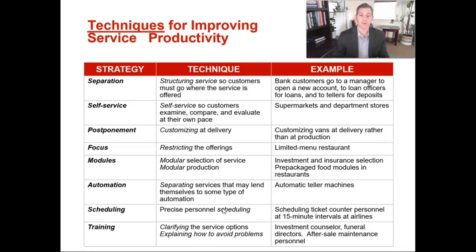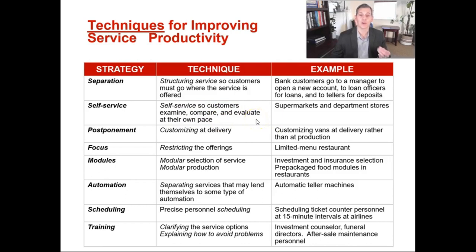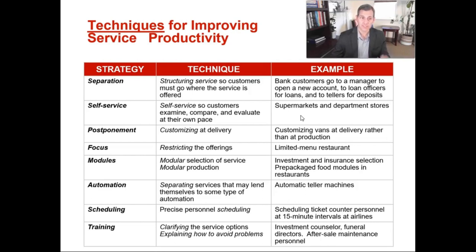There are techniques for improving productivity in the service sector. If you don't want to be highly customized and don't want a high degree of labor, there are ways to improve service productivity. Think about self-service — customers examine things, compare them, and evaluate them at their own pace. An example is self-checkout at the supermarket. You take your time walking through the supermarket and then literally check yourself out. Supermarkets have become more productive because they don't need people helping you in the aisles and then checking you out every time.